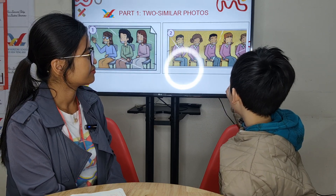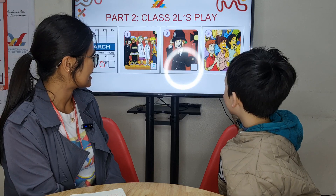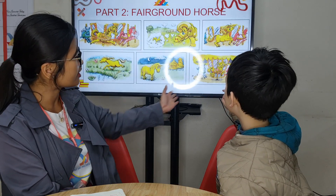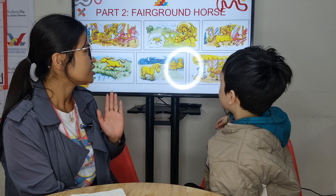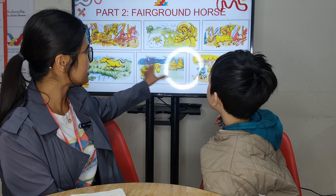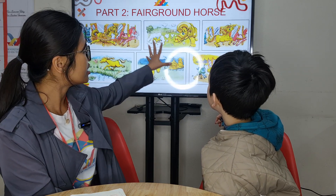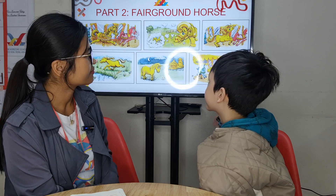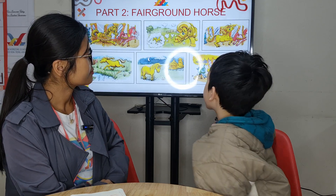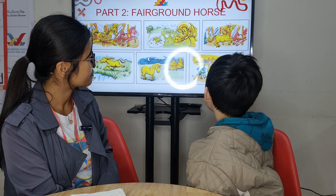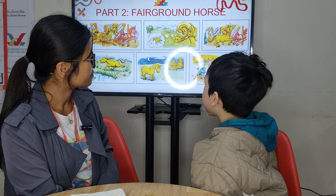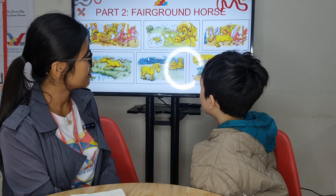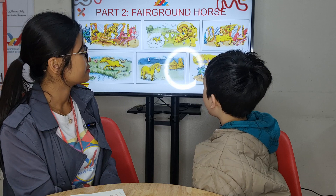There are five children. Well done. Now let's move on to the story about the fairground horse. Jack, using the pictures, can you tell me what happened in the story? Susie is a big round horse.